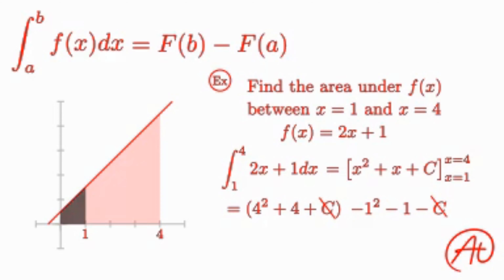Okay, going through and solving this expression, we find 16 plus 4 minus 1 minus 1, which is 20 minus 2, which is 18, and our desired area shown here.